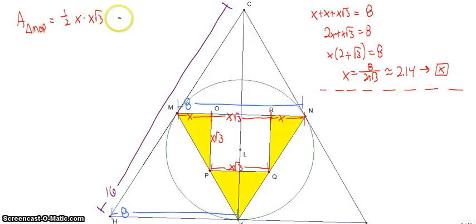The area of triangle RNQ is the same, another one half X times X root 3. If we add those together, that's just going to be X squared root 3. That's the area of the triangle on the left and the triangle on the right.